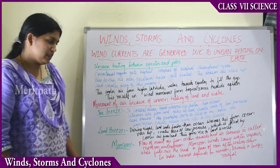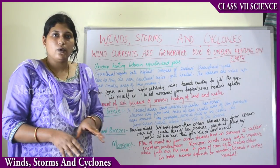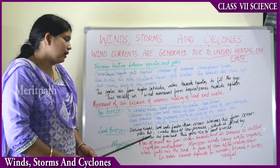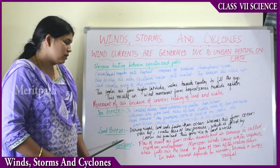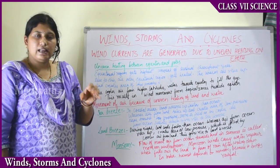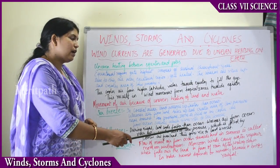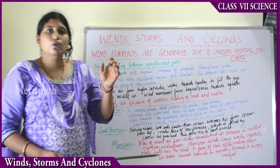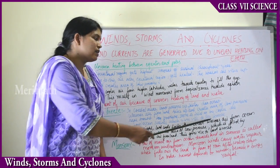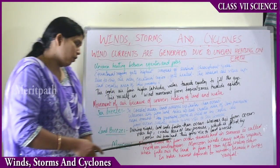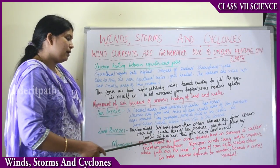During the nighttime, land cools faster than the ocean. The air above the ocean cools slowly, whereas the air above the land cools faster during evenings. The warmer air from the ocean then rises up, creating an area of low pressure, which is occupied by the cooler air from the land — this is called land breeze.